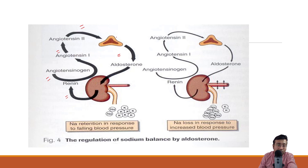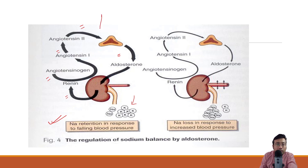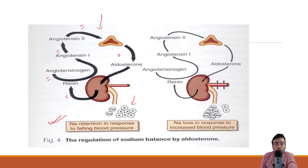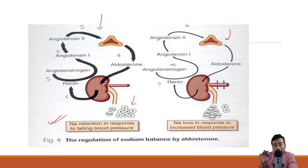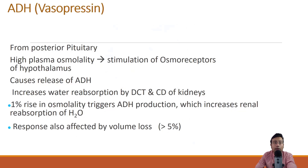Whenever the body needs to retain sodium, there is more secretion of aldosterone, governed by angiotensin 2, which is governed by angiotensin 1, which is governed by angiotensinogen, which is controlled by renin. This is a complete feedback loop. In a falling blood pressure emergency, the system retains sodium. In the opposite scenario of increased blood pressure, RAS secretion is decreased, kidneys are free to excrete profuse sodium, and BP falls — this is reciprocal regulation.